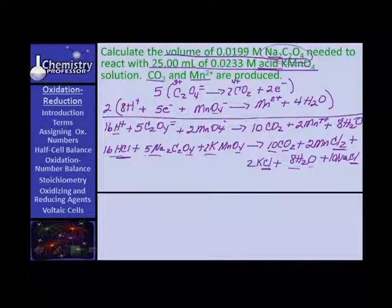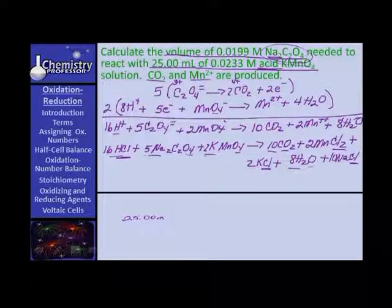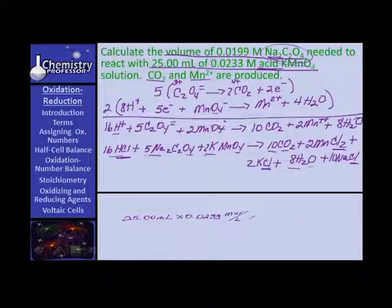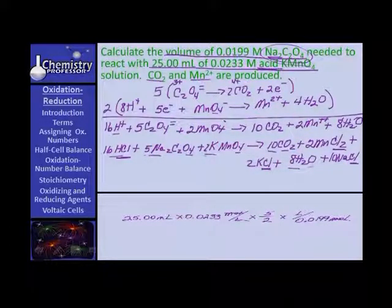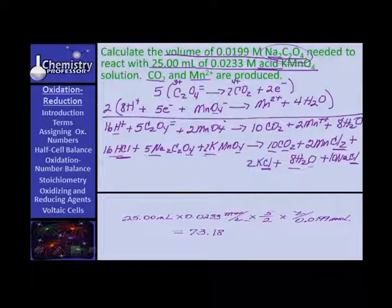Now we're ready to work the rest of the problem. Let's take our 25 milliliters of our potassium permanganate times 0.0233 moles per liter, times the stoichiometric ratio which is 5 over 2, to get us over to the sodium oxalate, times liters over 0.0199 mole. Moles and moles cancel, liters and liters cancel. We should come to an answer of 73.18 milliliters.